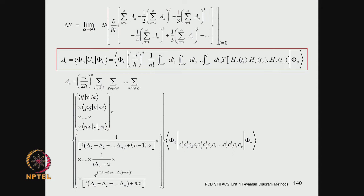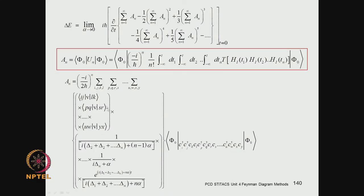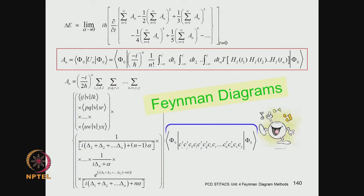We obtained this by generalizing: we got the first-order term explicitly, the second-order term explicitly, and then generalized to the nth order term. It has a number of two-center integrals, terms from time integration, and a lot of creation and annihilation of electrons responsible for configuration interactions and generating electron correlations. To represent these terms, the diagrams known as Feynman diagrams provide a very convenient and powerful tool, which is what we will discuss today.